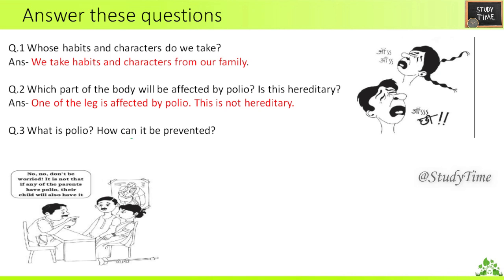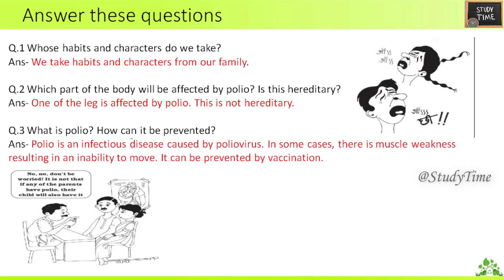Third — what is polio and how can it be prevented? Polio is an infectious disease caused by the polio virus. In some cases there is muscle weakness resulting in an inability to move. It can be prevented by vaccination.